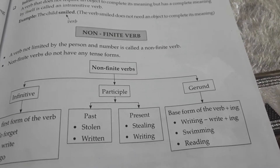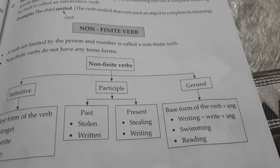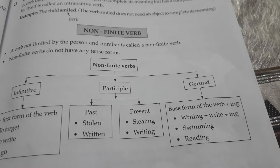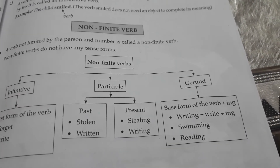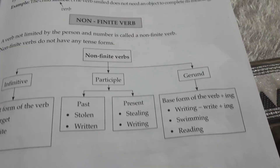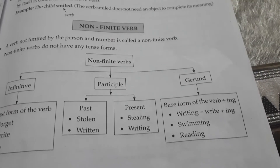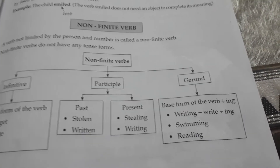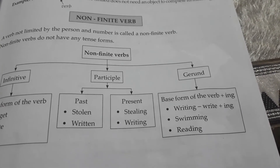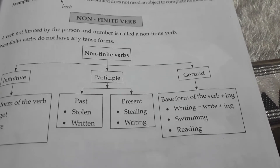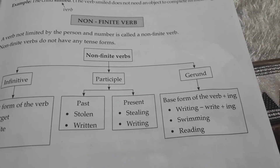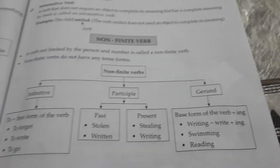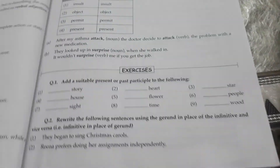Gerunds are verbal nouns. They are verbs in the -ing form but they perform the role of a noun in the sentence.